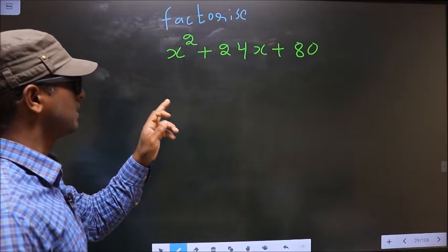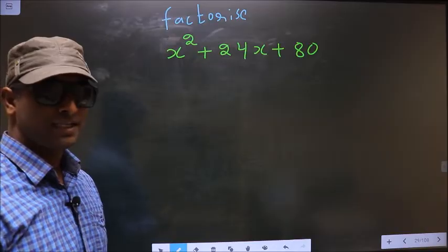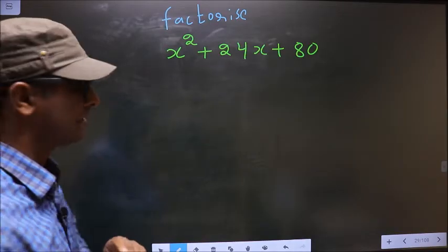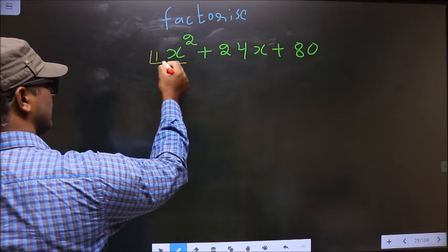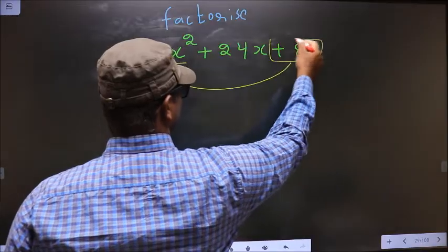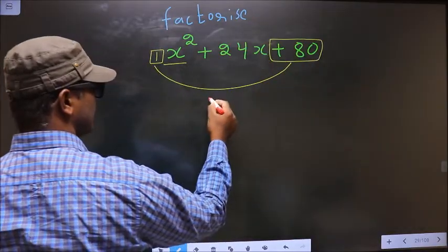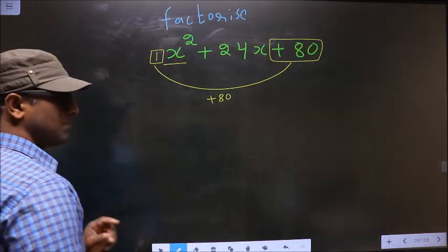Factorize x square plus 24x plus 80. To factorize, step 1: the coefficient of x square, that is 1 here, should be multiplied to the constant, that is plus 80. So 1 into plus 80 is plus 80. This is your step 1.